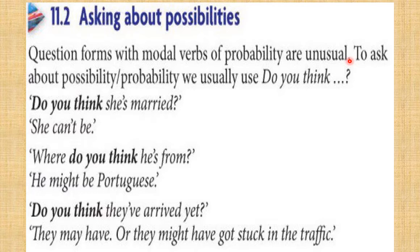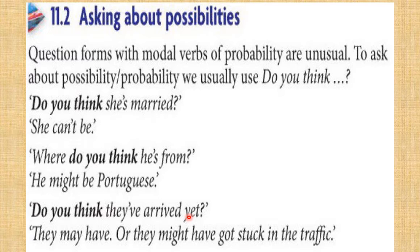Asking about possibility: question forms with modal verbs for probability are unusual. We usually say 'Do you think...?' rather than a modal in question form. For example: 'I think you will / I don't think you will,' 'Do you think she's married? She can't be.' 'Where do you think he's from? He might be Portuguese.' 'Do you think they've arrived yet? They may have or they might have got stuck in traffic.'